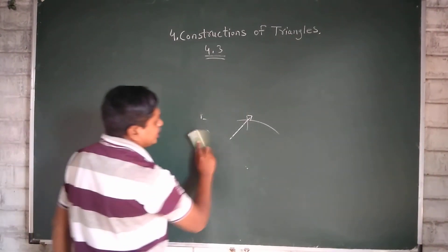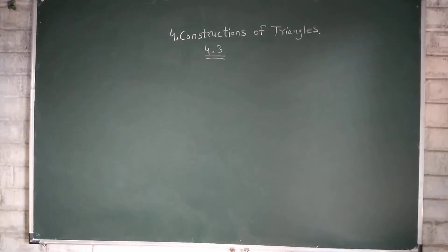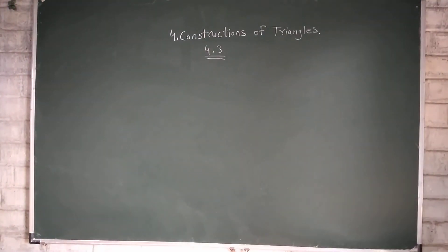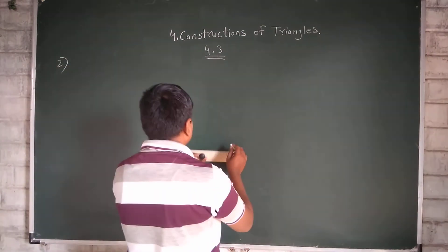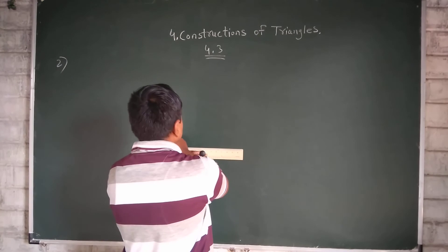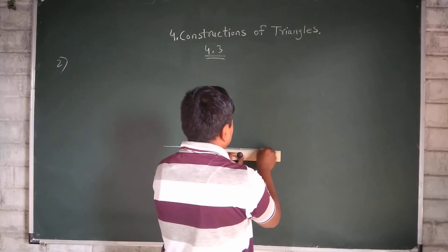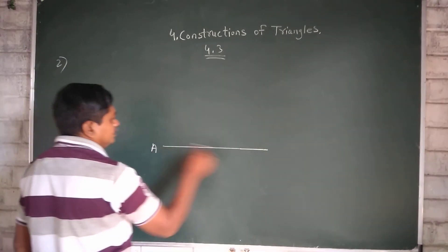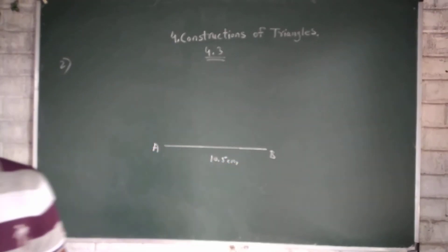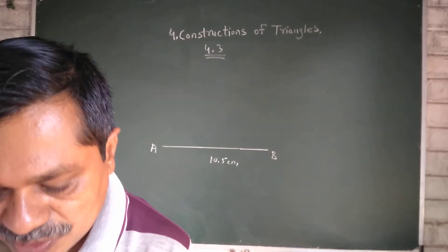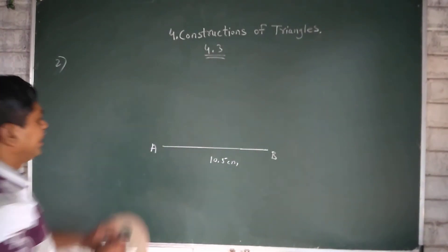First we will take the length 10.5 cm. Angle X is 46. So half of 46 is 23 degree. So angle A we will take 23 degree.